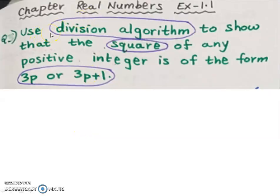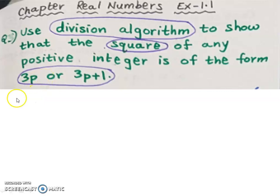As promised, here is the tip. In a previous question, we had to prove the square of any positive integer is of the form 3p or 3p plus 1. The procedure is the same — just keep an eye on the keywords: division algorithm, whether it is square or cube, and the given form. The alphabets like m or p don't matter.